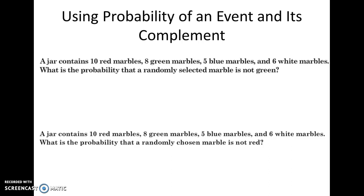So last thing, using probability of an event and its complement. A jar contains 10 red marbles, 8 green marbles, 5 blue marbles, and 6 white marbles. What's the probability that a randomly selected marble is not green? So one way you could do this is you could already just figure out how many marbles aren't green, or complement, that means let's figure out how many marbles are green. What's the probability of pulling a green?